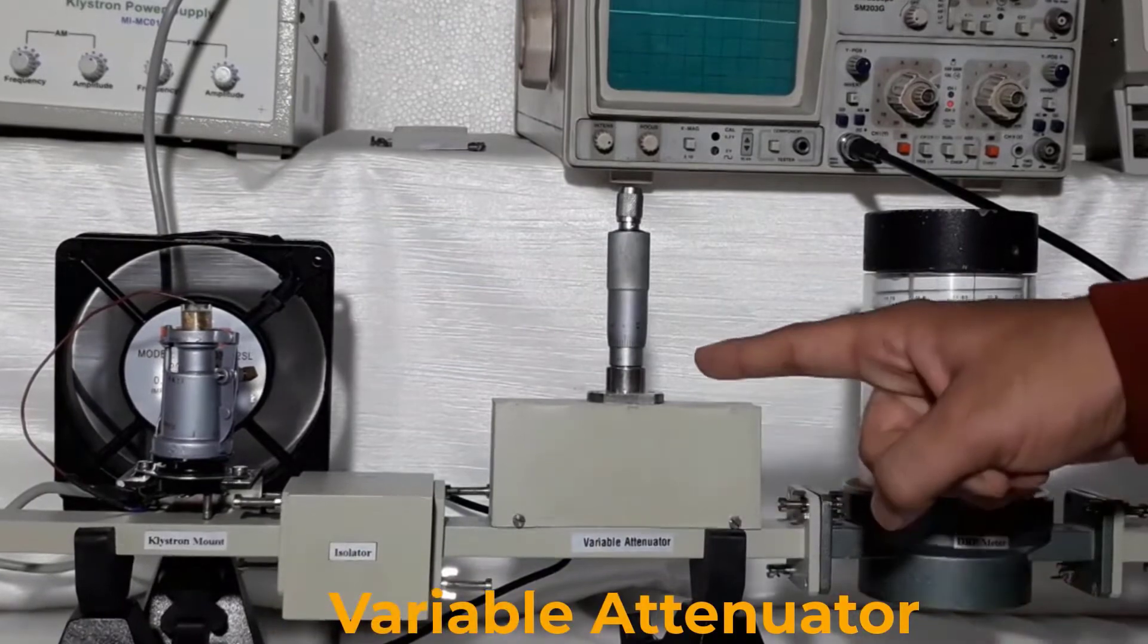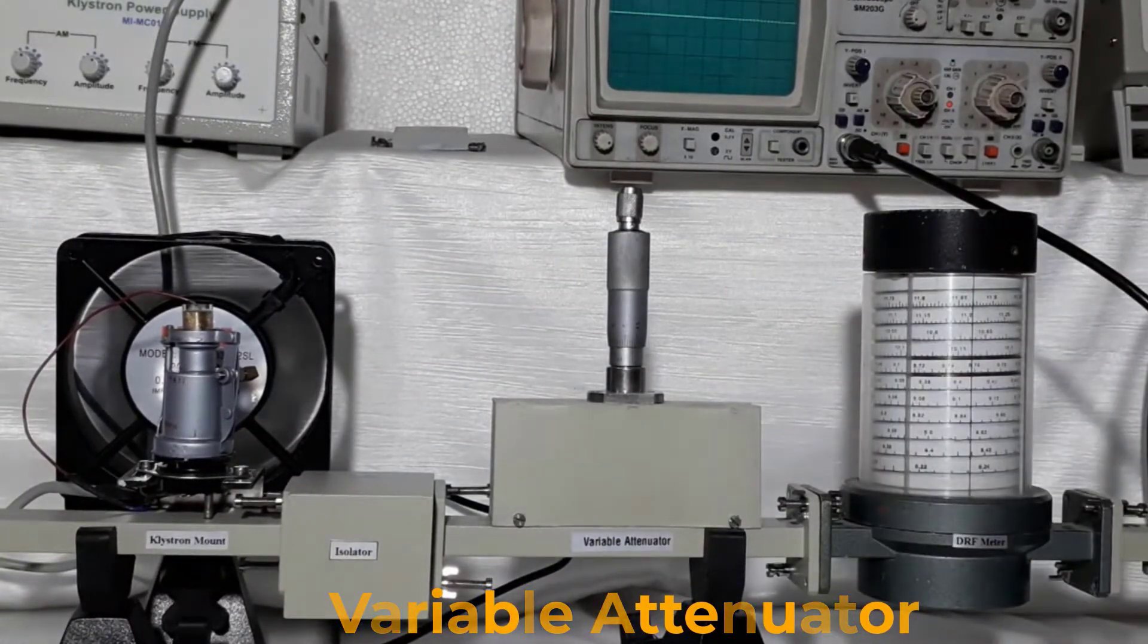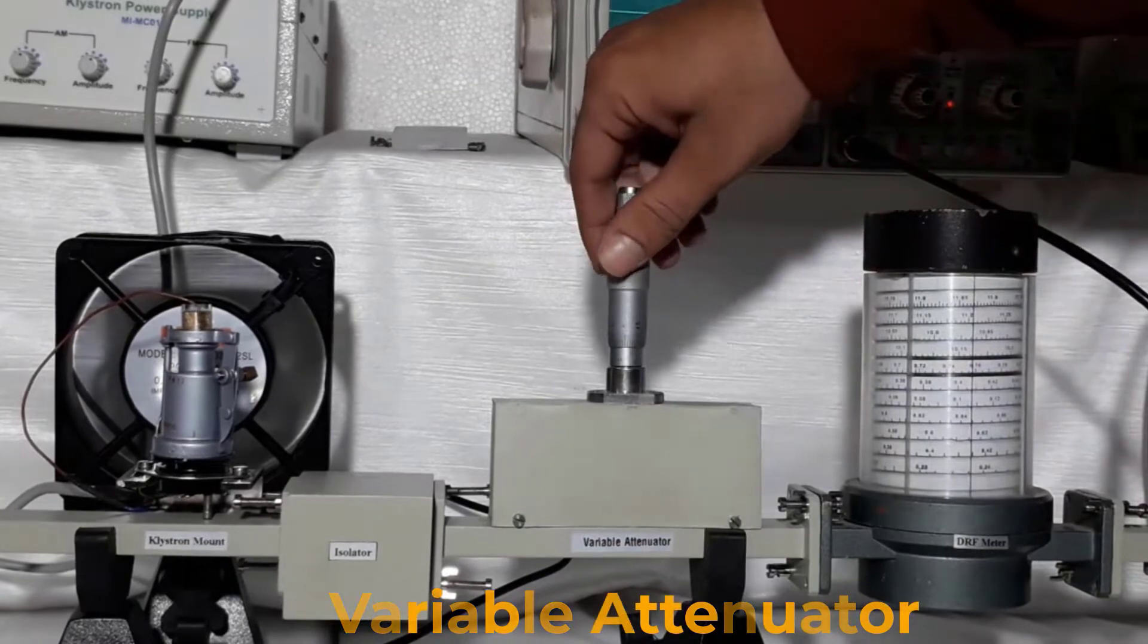Variable attenuator is connected after the isolator. This is used to attenuate power of microwave signals. Initially, variable attenuator is set for no attenuation.